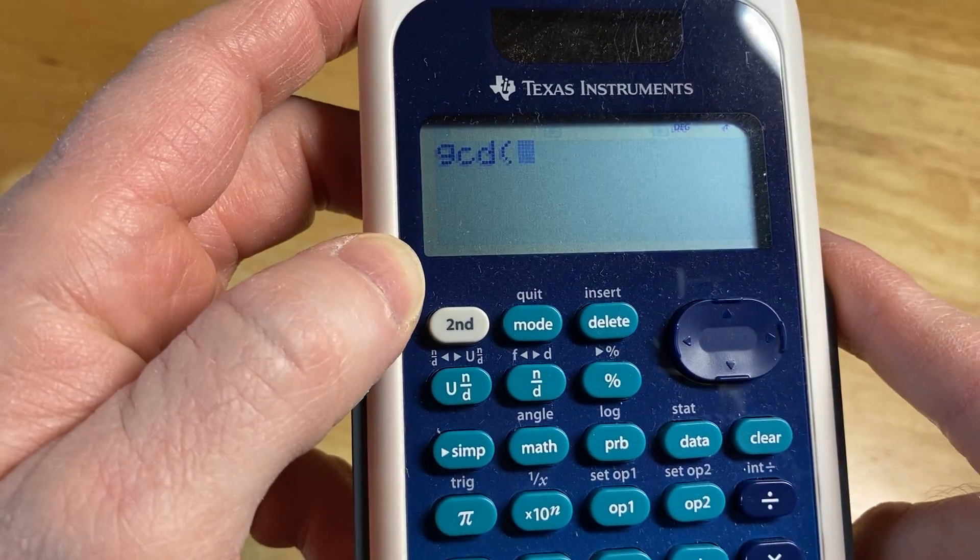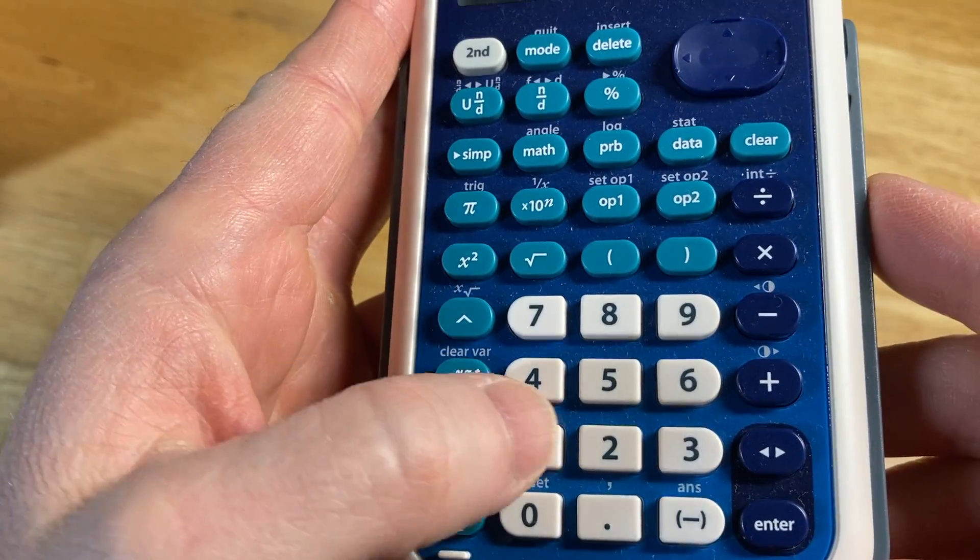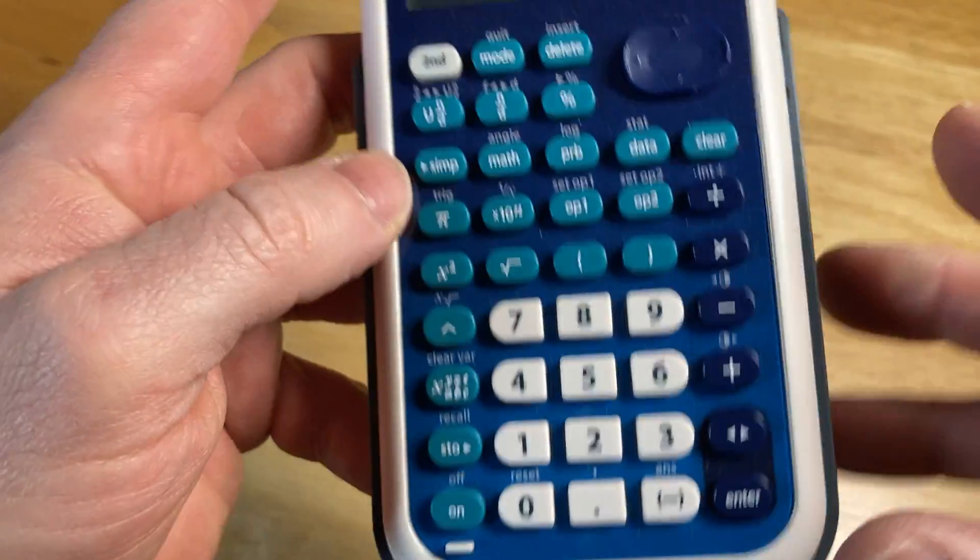And let's find the greatest common divisor of 10 and 4, which should be 2. So you press 10, and then there's the 10, it's been entered.